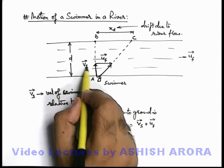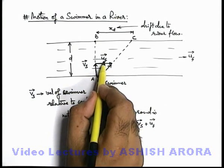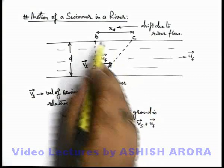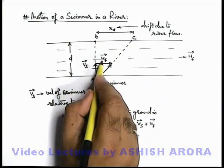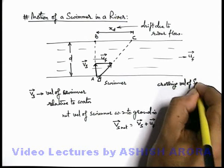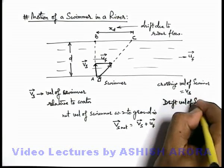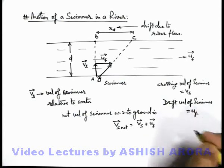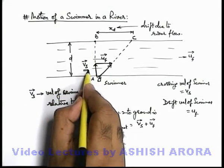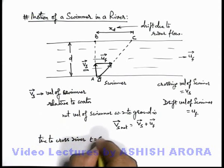The river current u_f gives no contribution in crossing but drifts the swimmer away from point B to point C. So the drift velocity is simply u_f. The crossing velocity of swimmer is v_s. The time to cross the river is d divided by v_s, because he is crossing the river in the y direction — perpendicular to the river current — with velocity v_s, covering distance d.